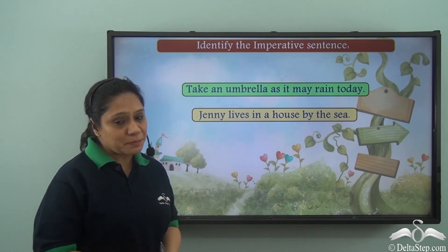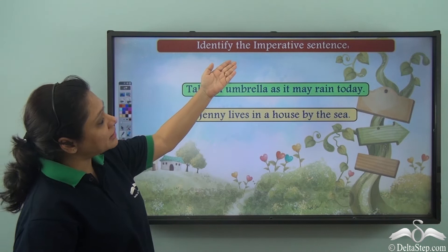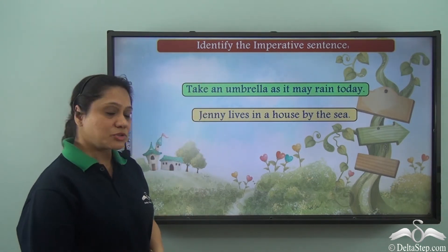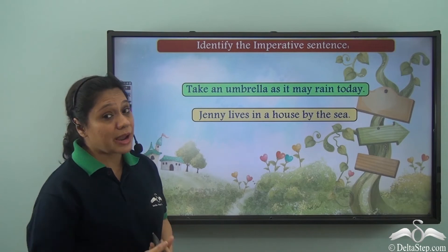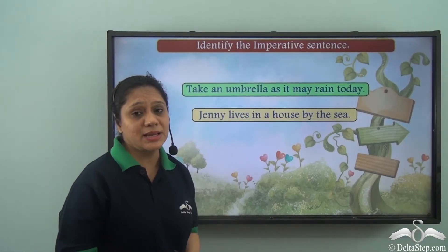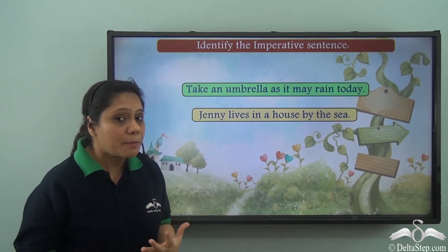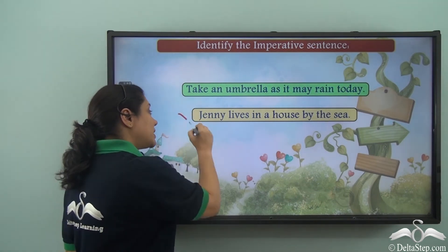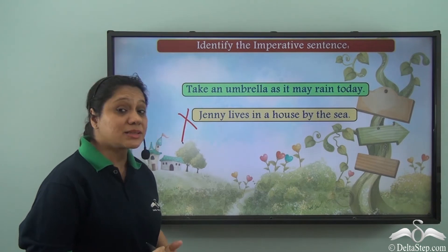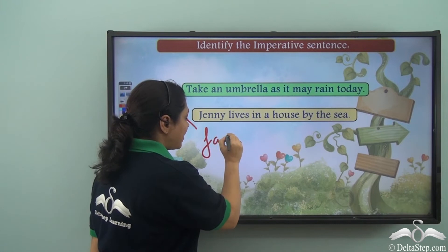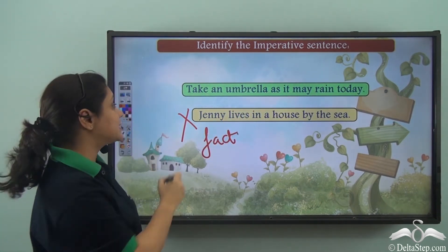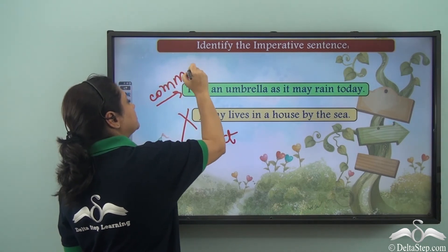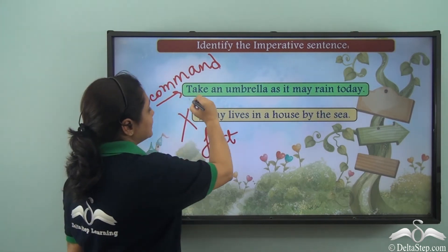Now that you have learnt about imperative sentences in detail, can you identify the imperative sentence here? We have two sentences: 'Take an umbrella as it may rain today' and 'Jenny lives in a house by the sea.' Which of these shows a command or a request? 'Jenny lives in a house by the sea' is just stating a fact — there is no command or request, so it is not an imperative sentence; it is a declarative sentence. But 'take an umbrella as it may rain today' is giving us a command, so this sentence is an imperative sentence.